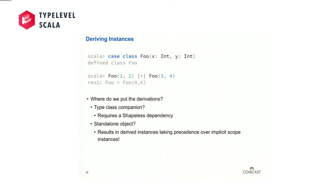Maybe instead we put all of those implicit derivations in a standalone object. But think what happens if we do that — if we import everything in that standalone object into lexical scope, we're going to override instances provided in implicit scope. The compiler's never going to move on to implicit scope; it's always going to use the derivation stuff first. So we have this nasty problem that users should not have to think about in order to use our libraries.